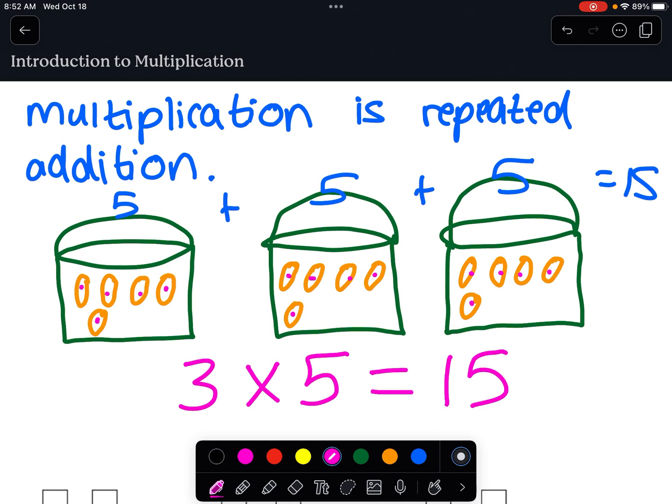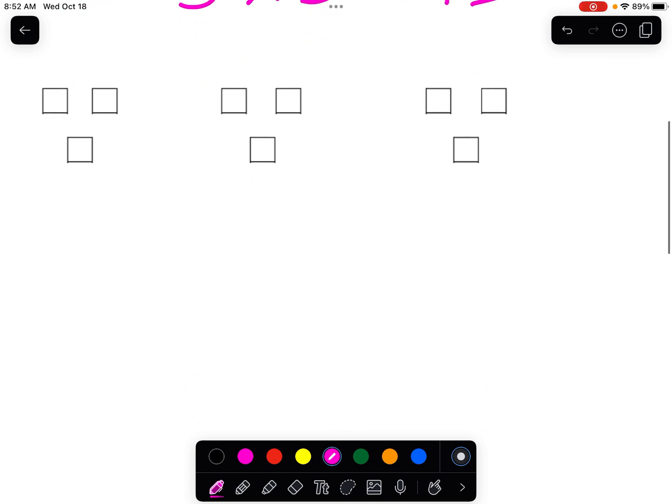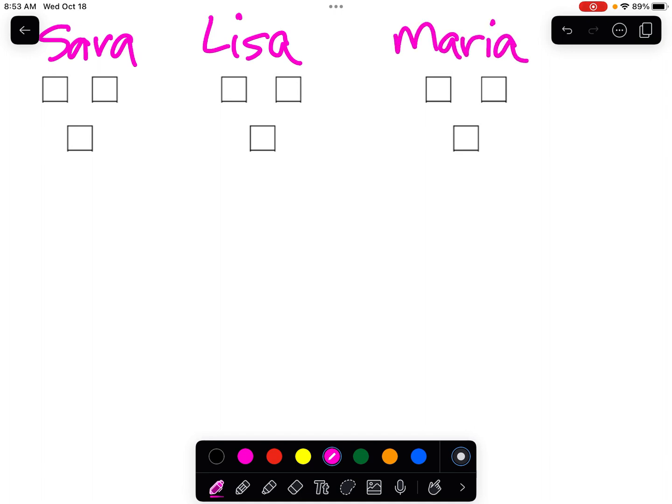Now you're going to be learning your multiplication facts. Some of you even know a few already. But three times five is fifteen, and that's the basic idea behind it. Now, you all have used counters in the past. Let's think of another example here. Let's pretend I have some cupcakes that I've made, and I decide that I want to give them to some friends of mine. I have a friend named Sarah, a friend named Lisa, and a friend named Maria. And I decide I'm going to give each of them three cupcakes.